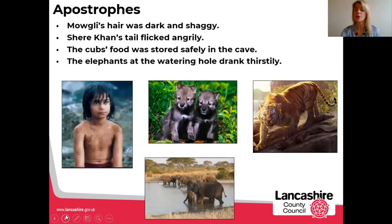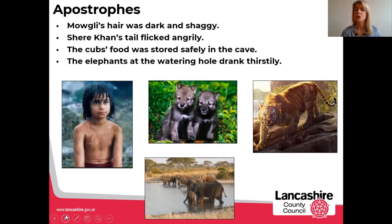Of course, I want to apply that and over-teach it within the context of my text. Back to Into the Jungle, I've got some examples: 'Mowgli's hair was dark and shaggy,' 'Shere Khan's tail flicked angrily,' 'The cub's food was stored safely in the cave.' And I've thrown in a red herring — 'The elephants at the watering hole drank thirstily' — which is just a plural. I could print out those cards for the children to hold up and do some of those sentences orally. And that's all for me — over to Stephen, take care.